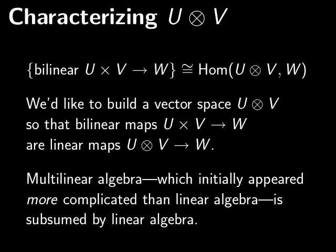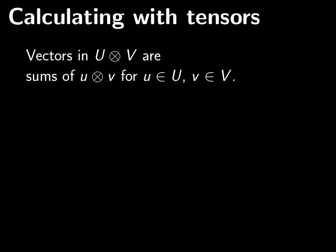The upshot of this, if we can actually build this vector space U tensor V, it means that we can take multilinear algebra, which looks more complicated than linear algebra, and put it inside linear algebra. That means that multilinear algebra becomes just a special case of linear algebra. Bilinear maps aren't any different than certain kinds of linear maps out of these tensor products. Now we're not actually going to be able to construct the tensor product, but I am going to tell you how to calculate with tensors.